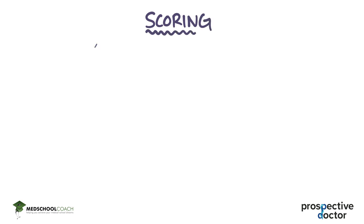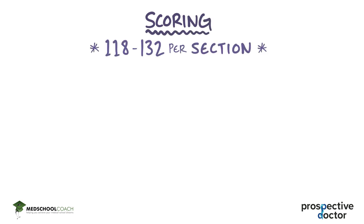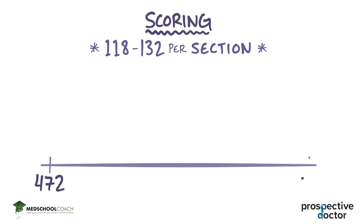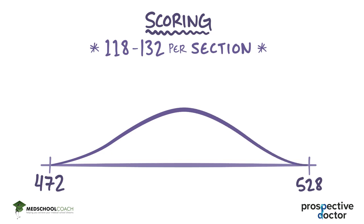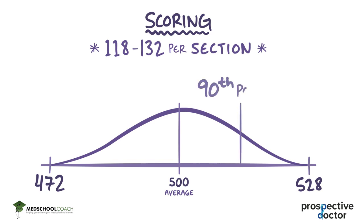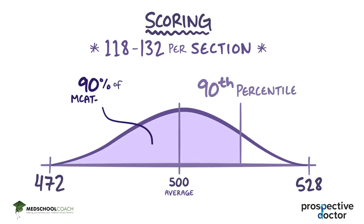Each section of the MCAT is scored between 118 and 132, so multiplying by 4 gives a total score between 472 and 528 — a 56-point spread. The average score per section is 125, so the average student will get a 500. It's important to know what percentile you fall into compared to others who have taken the MCAT in the past three years. These days, the top 10% are scoring above about 513, which is about 128 or more in each section.